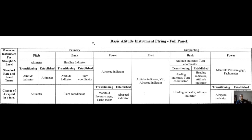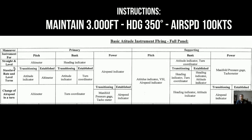Let's talk about two maneuvers. The first one is not really a maneuver — it's just a basic attitude. Let's say we are cruising at 3,000 feet, or we were instructed by ATC or by your instructor to maintain 3,000 feet, maintain 100 knots, and stay on a heading of 350. So we're supposed to hold that — that would be a straight and level flight.